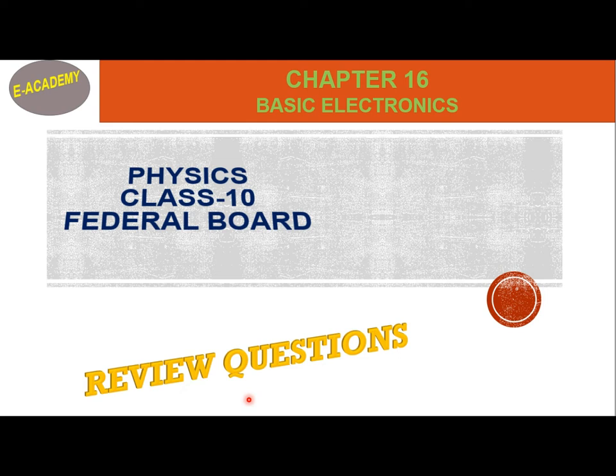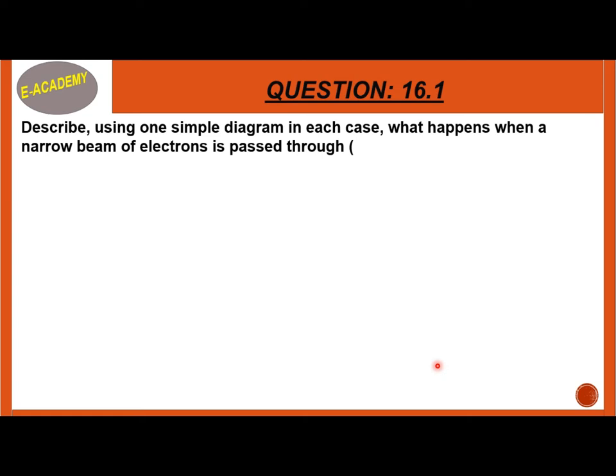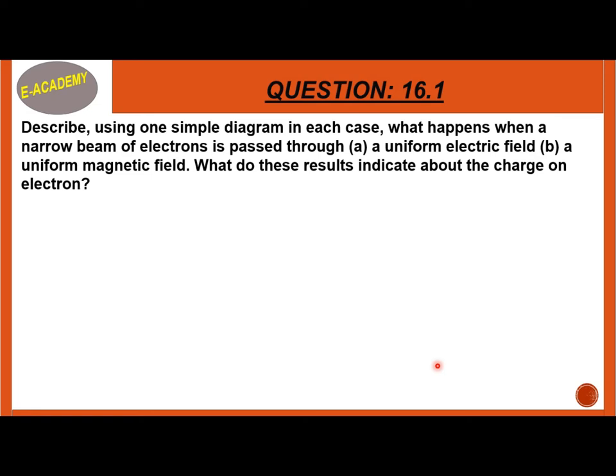Question 16.1: Describe, using one simple diagram in each case, what happens when a narrow beam of electrons is passed through: A, a uniform electric field, and B, a uniform magnetic field. What effect does each field have on electrons? What do these results indicate about the charge on electrons?